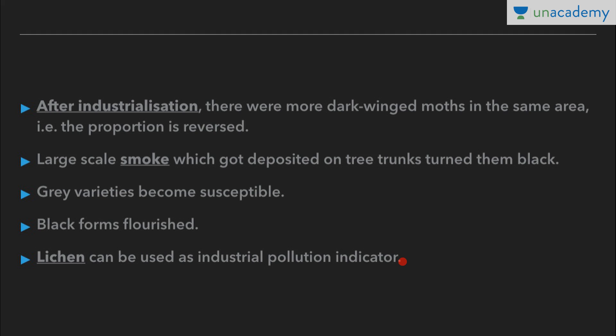Moths that were able to camouflage themselves — that is, hide in the background — survived. This is also supported by the fact that in areas where industrialization did not occur, such as rural areas, the count of melanized moths was low and that of grey or white-winged moths was high. So before industrialization we have grey moths dominant, and after industrialization we have more black moths.